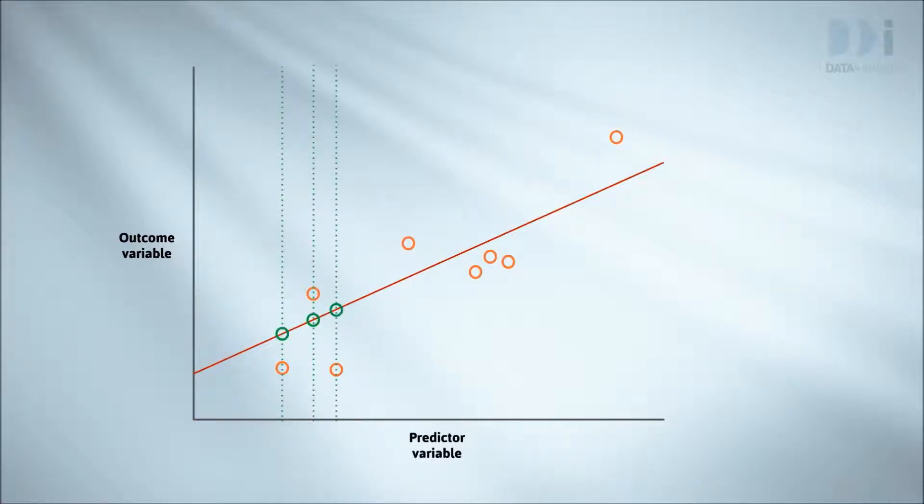For every data point, there's a corresponding point on the line. This is the prediction this line would make for that data point. The predicted point and the real observation seldom coincide, leading to a set of prediction errors. These prediction errors are the vertical arrows on the plot.